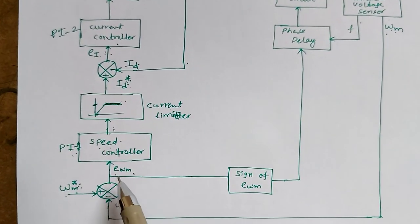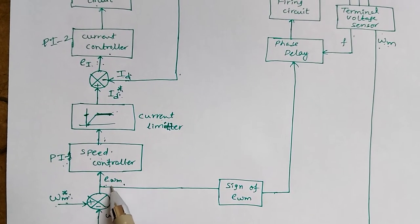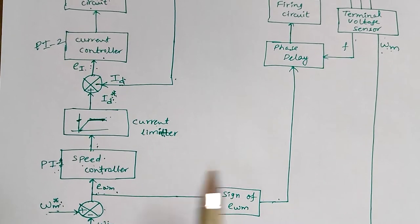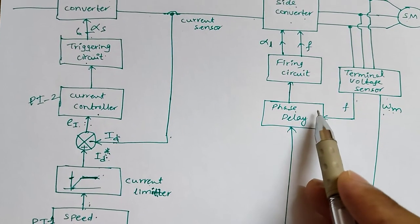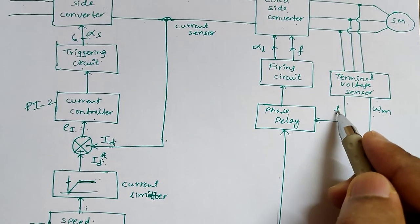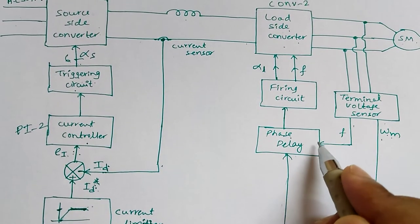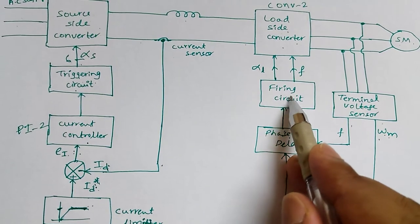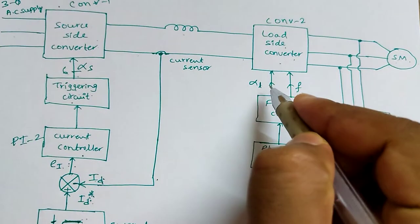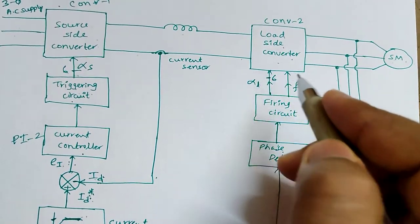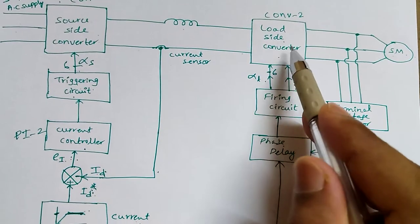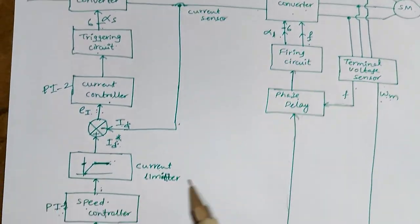To obtain the firing pulses for the load side converter, the rotor angle EΩm is passed through a sine function, giving 180-degree phase displacement. This is then passed through a phase delay block, which provides a delay for the frequency and the sine of EΩm, since the frequency should not change instantaneously. That output is given to the firing circuit of the load side converter, which also generates six firing pulses. These firing pulses, along with the required frequency, are given to the load side converter to operate it in the required speed range.